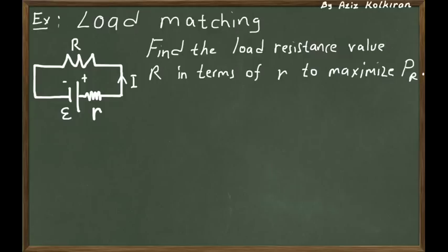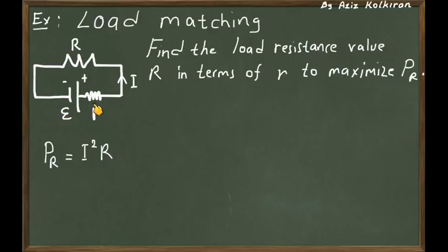If you decrease the load resistance R, then the current i will increase. So what to do? First, let's express this power in terms of the given values. The current i can be calculated symbolically as epsilon divided by R plus r.